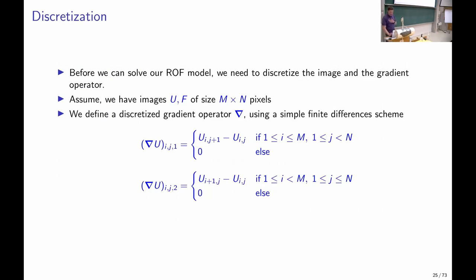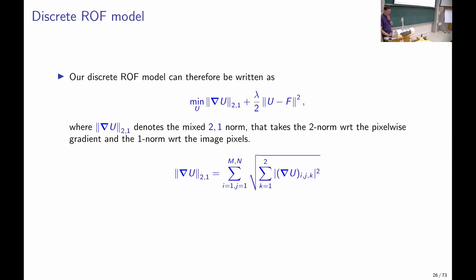For discretization, instead of continuous derivatives we use finite differences. In the discrete ROF model, u is a vector of pixel intensity values, the gradient operator is a matrix applied to this vector, and the total variation is represented as a 2,1-norm: the 2-norm computes the gradient magnitude at each location (with two components), and the 1-norm sums over the image domain.